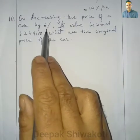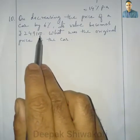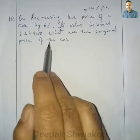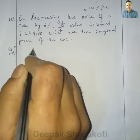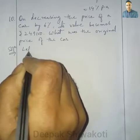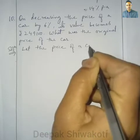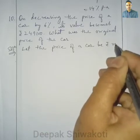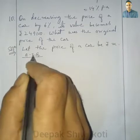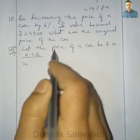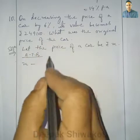Question number 10: On decreasing the price of a car by 6 percent, its value becomes 2,49,100. What was the original price of the car? We will start by letting the price be x. Let the price of the car be rupees x. According to the question, it is decreasing, so we write x minus 6 percent of x.